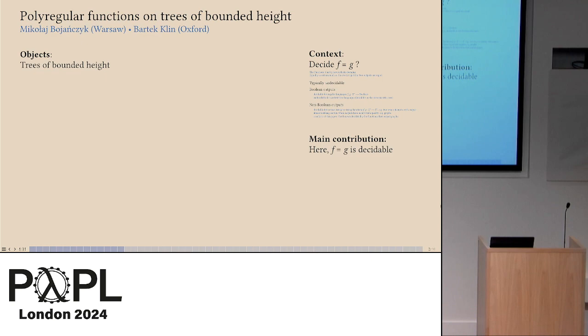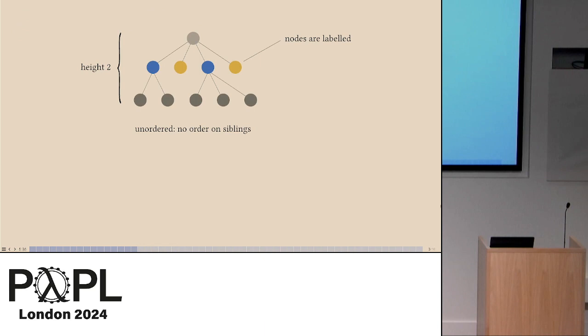Now I'll define the kind of objects that we're going to be transforming and then the kind of functions that are used to transform them. The objects are trees of bounded height. So here's a tree. Just terminology: height is the maximal number of edges in the root-to-leaf path. I would be interested in trees of bounded height. And they will be labeled. The nodes will be labeled. And an important thing, which is actually the title of the paper, is the trees are unordered, which means you don't have such a thing as a first child. They just have children. So they're graphs in that sense.